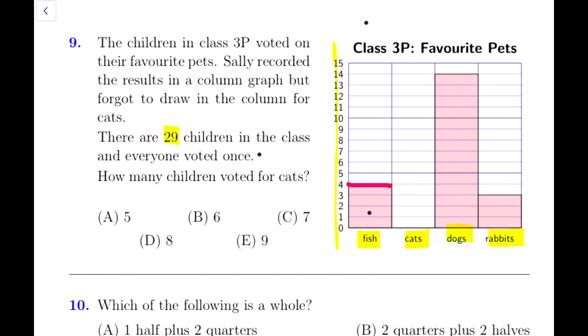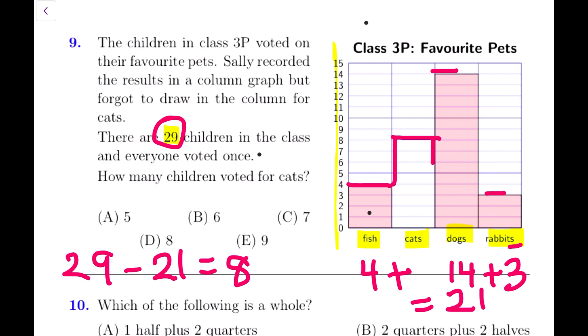We can find that information by looking at other. For fish, there are 4 children who voted for fish. Cats, we have to find out. Dogs, there are 14. How many children voted for rabbits? That is 3. Now we can add up all these numbers: 14 and 4 and 3, that is 17 and 4 is 21. So 21 children opted for fish, dogs and rabbits, but there are 29 children in the class and every child voted once. So that means there are 8 more children. 29 take away 21 is 8. There are 8 more children who voted and there's just cats missing. That means 8 children must have voted for cats. And this is our answer, D.